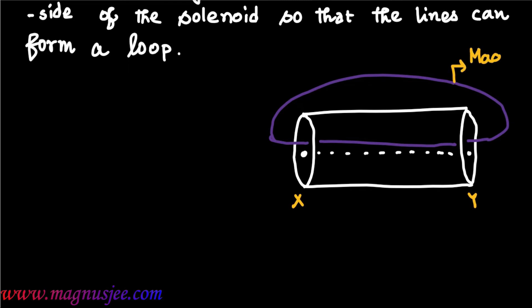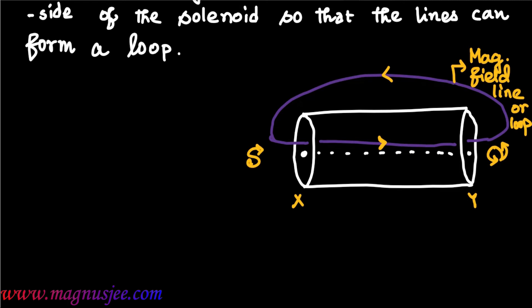X and Y are the two ends. The magnetic flux or magnetic field line has direction from south pole to north pole inside the solenoid, and is directed from north pole to south pole outside the solenoid. This violet-color magnetic field line is a closed loop.